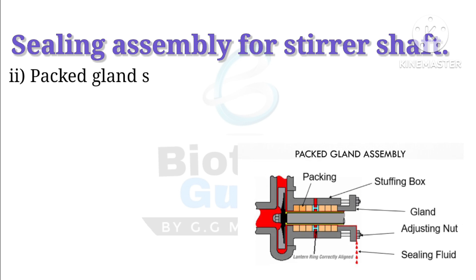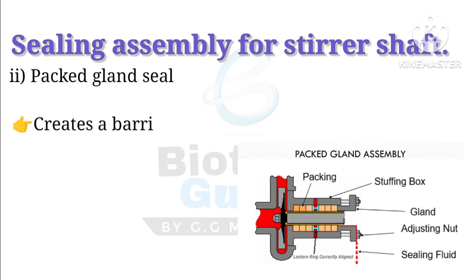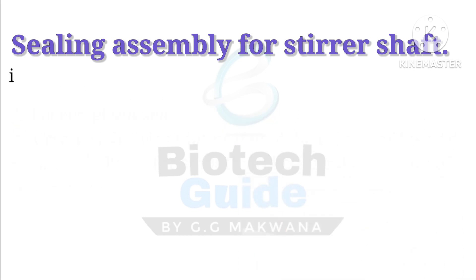The second is the gland packing seal. Gland packing mainly consists of a twisted material such as graphite, PTFE, or aramite fibers that are placed around the shaft. This kind of assembly is observed around the shaft and is mainly used to create a barrier that prevents the escape of fluid or gases and allows for smooth and efficient operation of the machinery.